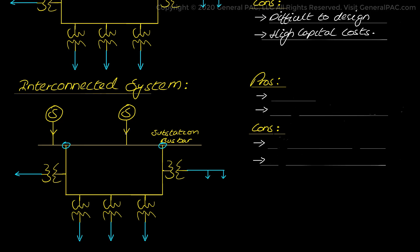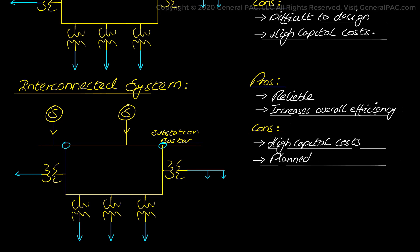By increasing the number of supplies, the service is made more reliable. Any zone fed from one generating station during peak hours can also be fed from the other generating stations. This reduces the reserve power capacity of a single station and increases the efficiency of the overall system, minimizing current stress on a single feeder and reducing line losses to improve the quality of service.